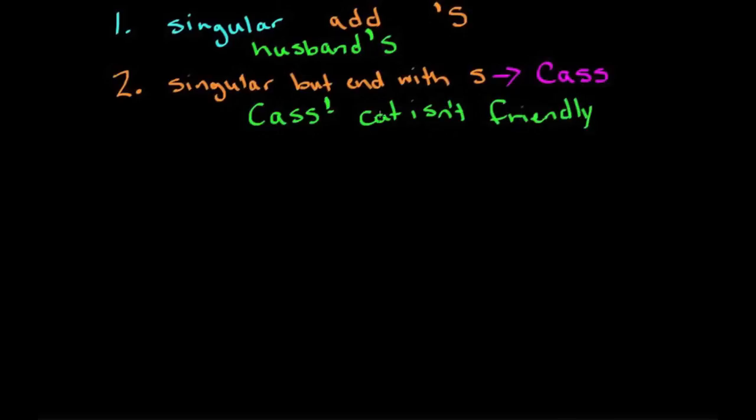Some people say you can do both with this. So some people say that you could do both and add it here. Cass's cat isn't friendly. Here I have an example of also when we use the apostrophe for a contraction here. But that's different from the possessives.